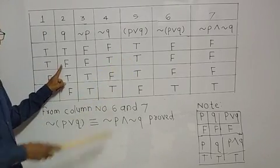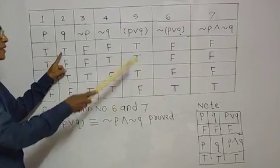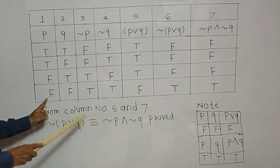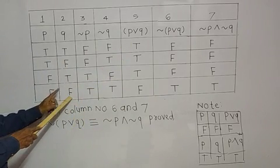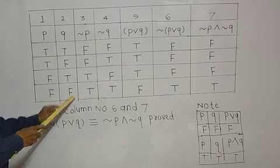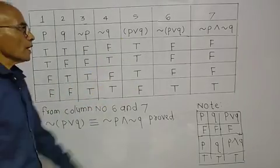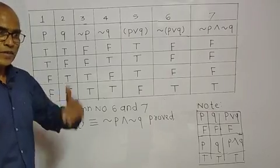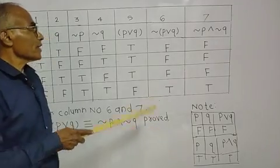When both P and Q are false, the OR value is false. Now for negation of P or Q, we take the negation. True becomes false, false becomes true, false becomes true, false becomes true.